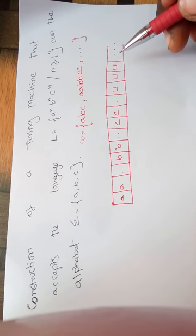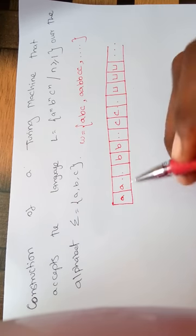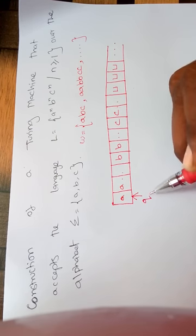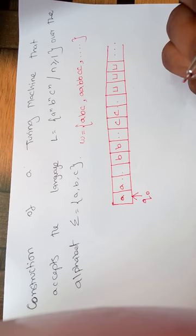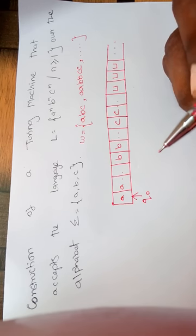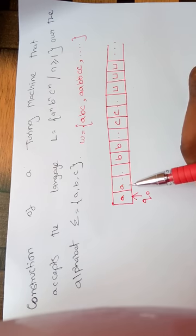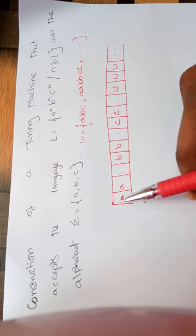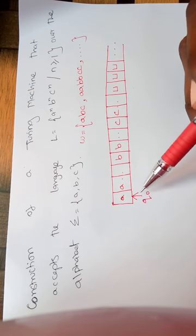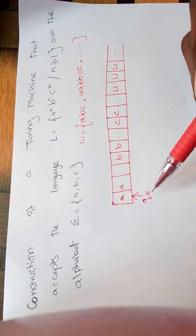Whenever we are starting a Turing machine the input is written from left to right. We have a read-write head that focuses on the first element and the transition always starts with the starting state Q naught. So these are the assumptions that we are going to consider while constructing a Turing machine.